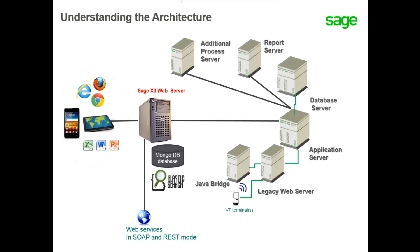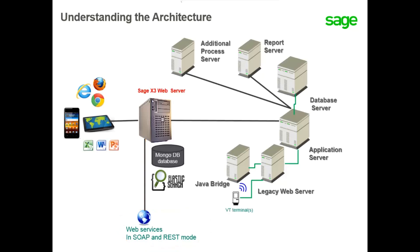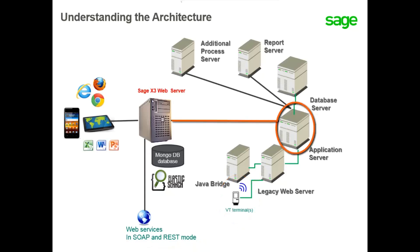The web client uses a URL address. This is where the user enters transactions that update to the application server and the database server. Beginning with product update 9, web services are now carried out on the Sage X3 web server. The web server in the classic architecture is used only for VT terminal connections. Several application servers can be connected to the Sage X3 web server.